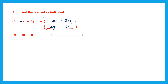Question 2. m plus n minus p — three terms, and on the right hand side there is only a minus sign before the bracket. So the sign of all these terms will change when put inside: plus m becomes minus m, plus n becomes minus n, minus p becomes plus p. Rewriting with the positive sign first: plus p comes first, then minus m minus n.